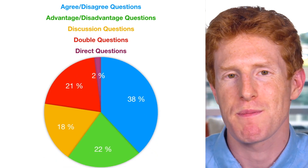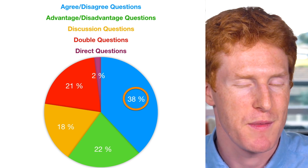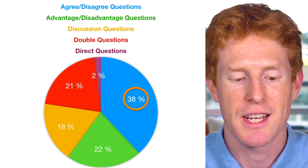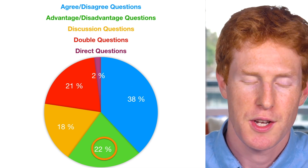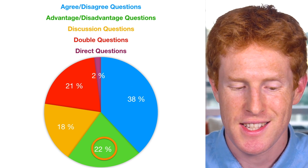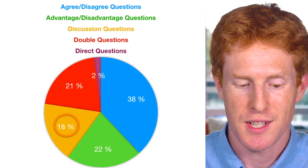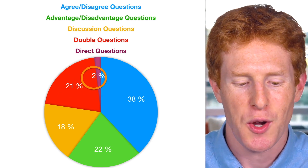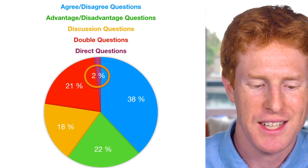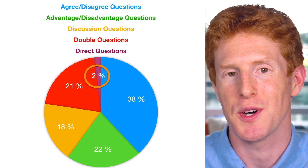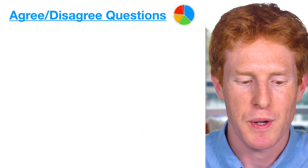As you can see from this pie chart, the most common question type is agree-disagree questions — 38% of the time in task two you're given an agree-disagree question. 22% of the time you have an advantage-disadvantage question, roughly one in five. 18% of the time you have a discussion question, 21% a double question, and only 2% a direct question. It's still important to practice all of these different essay types before your IELTS writing test.